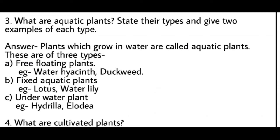First type: free-floating plants — examples are water hyacinth and duckweed. Second type: fixed aquatic plants — jinki jaadein zameen ke andar fixed hoti hain — examples are lotus and water lily. Third type: underwater plants — paani ke andar ugne waale paudhe — examples are hydrilla and elodea.